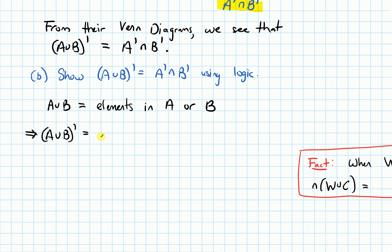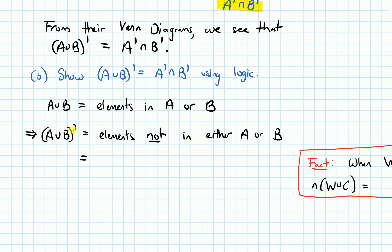The complement is the set of elements that are not in the previous set, so A union B complement is the set of elements not in either A or B. I'm using an implication arrow here, as opposed to an equal sign, because A union B is not the same as A union B complement in general. So this complement is the set of elements that are not in either A or B.